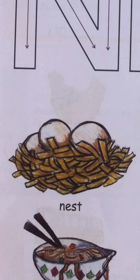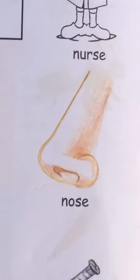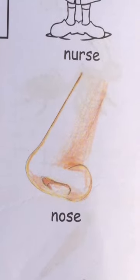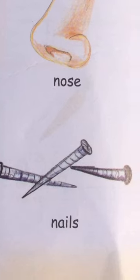Uske baad hai Nest. Then, Nose — nose mein starting ki awaaz N aa rahi hai. N for nose. Uske baad hai noodles — aap sab bachon ko pasand hai na noodles — N se noodles. Uske baad hai nails — N for nails. Nails ke bhi start mein N ki awaaz aa rahi hai.